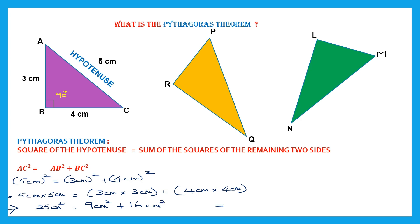Taking the left hand side: that is 25 cm squared. That is equal to the right hand side — 9 cm squared plus 16 cm squared. 9 plus 16 is 25, so that will be 25 cm squared. Left hand side is 25 cm squared and the right hand side is also 25 cm squared. This is what the Pythagoras Theorem states: the square of the hypotenuse equals the sum of the squares of the remaining two sides.